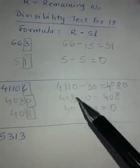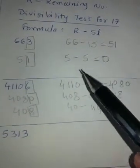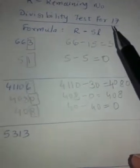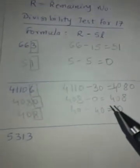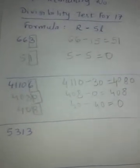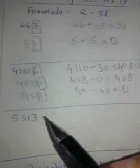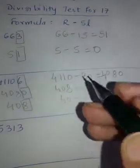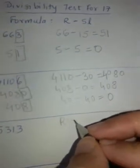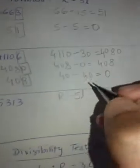Now after watching these two examples only, you must have come to know that by-hearting this table of 17 would have saved your time. In earlier video also, I advised you to by-heart the tables. I hope you have already started it. Let's again apply this rule here also. For this example, R-5L is our formula.